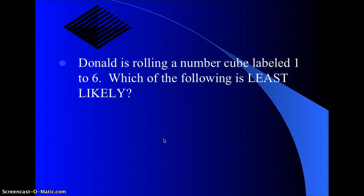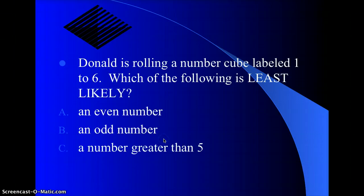Here's another one. Go ahead and write this one down too. Donald is rolling a number cube labeled one to six. Which of the following is least likely? Go ahead and pause it and answer it. Here's your answer choices. Which one of these is least likely to occur? An even number, an odd number, or a number that's greater than five for one through six. Pause it and answer it.